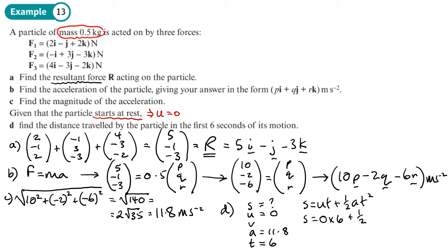Now that was 11.8, that was 2 root 35 or root 140, so 2 root 35 times by 6 squared. So we don't even need to rearrange anything, we'll just get the answer. So a half times by 2 root 35 times by 6 squared.